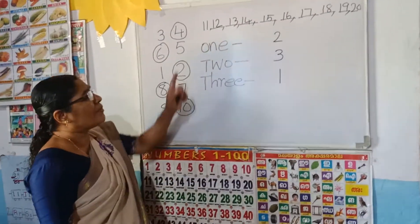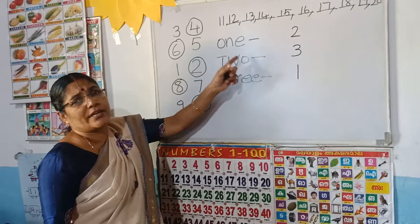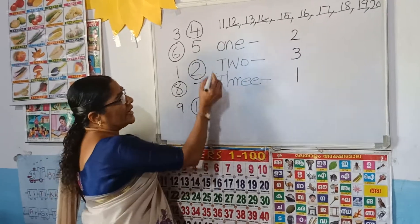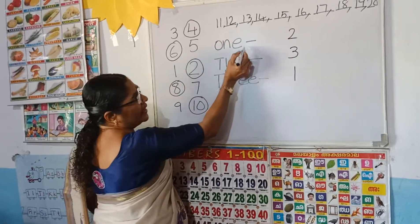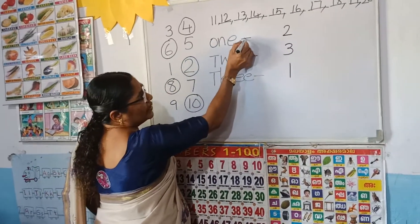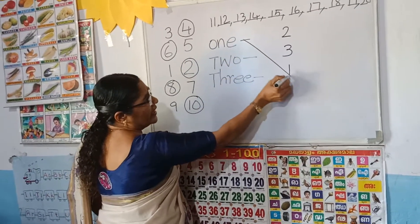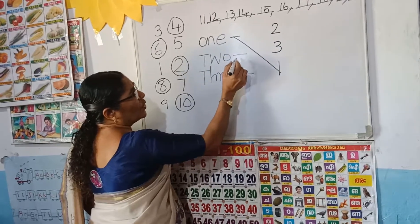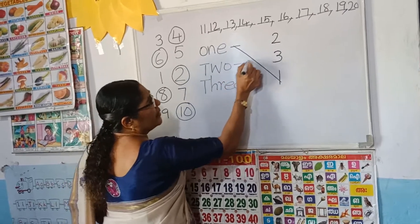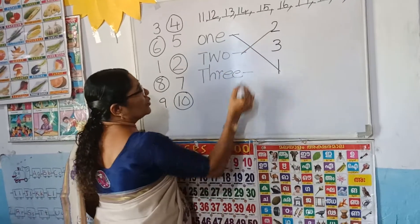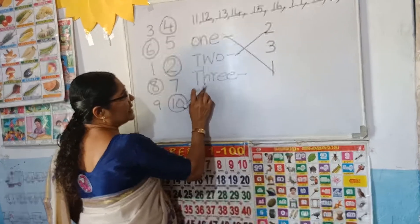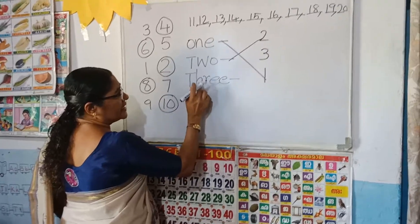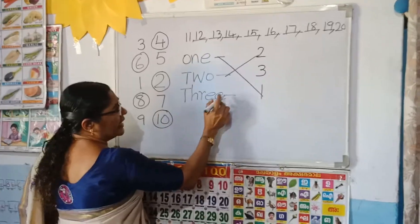And here, look — match the number to the number name. O-N-E: 1. Match the number to number name: T-W-O: 2. Match the number to number name: 3 — T-H-R-E-E: 3.